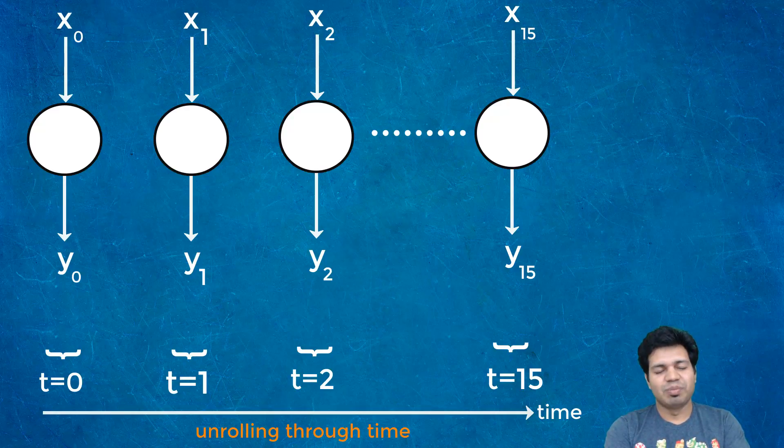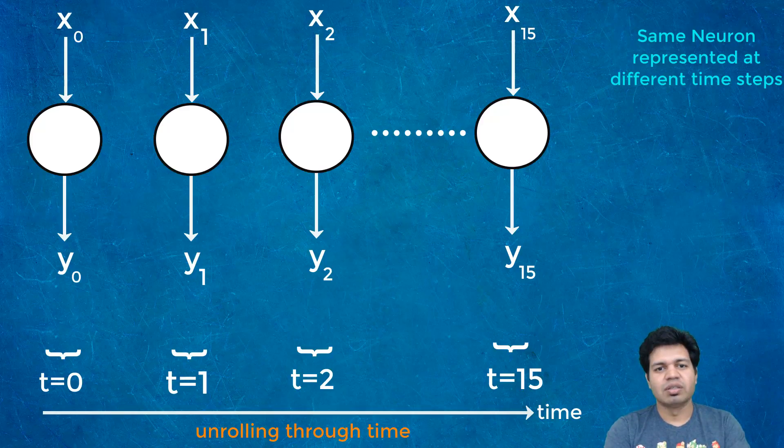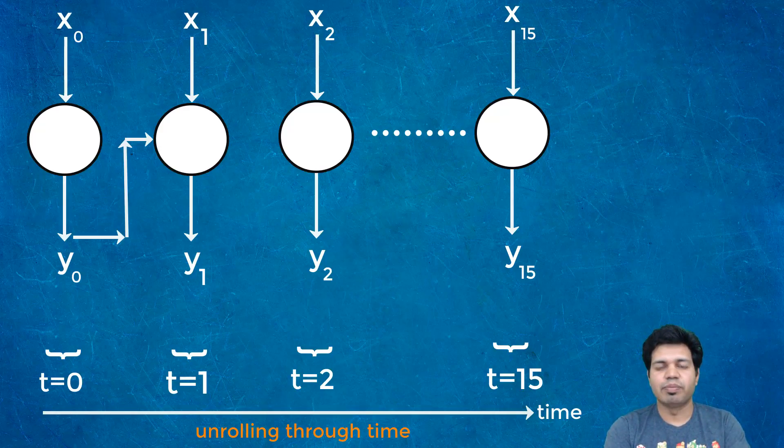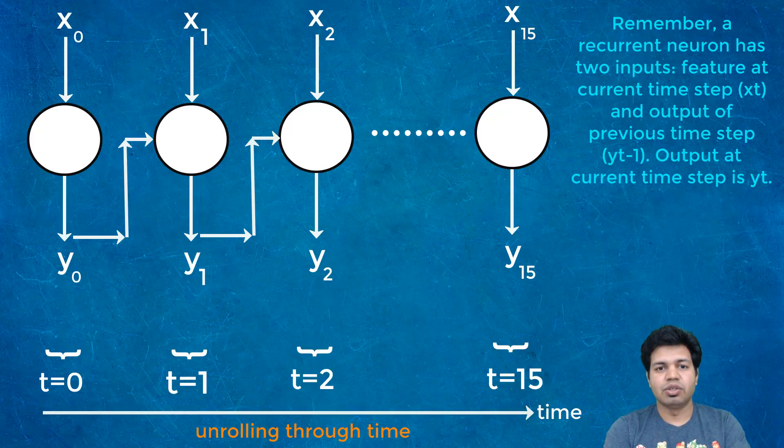Here I have a single recurrent neuron unrolled through time. The input is denoted by X of 0 at time step T equals 0, and output at that time step is Y of 0. If I use the same neuron at time step T equals 1, the input will be X1 and output will be Y1. Similarly, for time step T equals 2, the input will be X2 and output will be Y2. This is the same recurrent neuron represented at different time steps, which is why the output of the neuron Y0 is fed back as an input to the neuron at time step T equals 1, and Y1 is fed back as input at time step T equals 2, and so on.